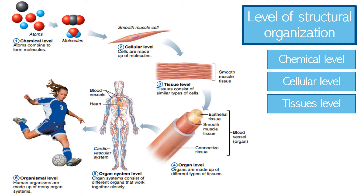From the tissue level, we move on to the next: the organ level. An organ is a structure composed of two or more tissue types that performs a specific function for the body. At the organ level of organization, extremely complex functions become possible. For example, the small intestine, which digests and absorbs food, is composed of all four tissue types.